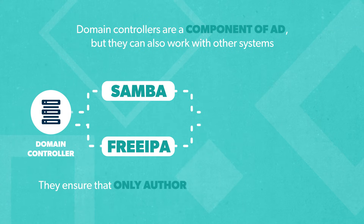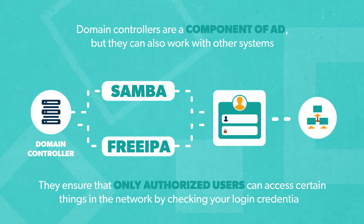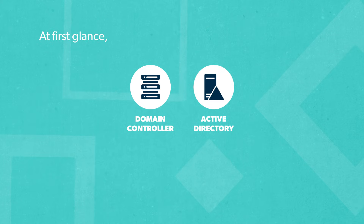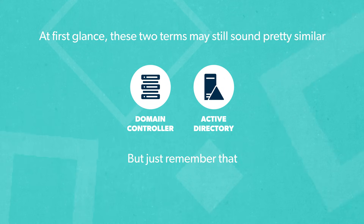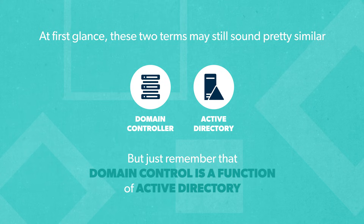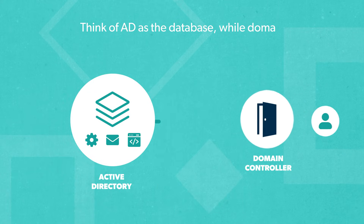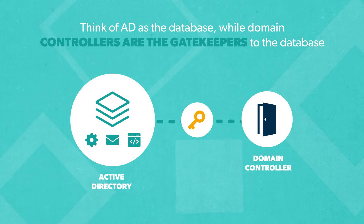They ensure that only authorized users can access certain things in the network by checking your login credentials. At first glance these two terms may still sound pretty similar, but just remember that domain control is a function of Active Directory. Think of AD as the database, while domain controllers are the gatekeepers to the database.